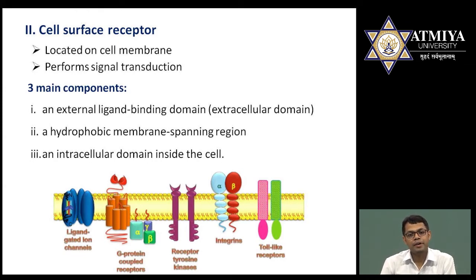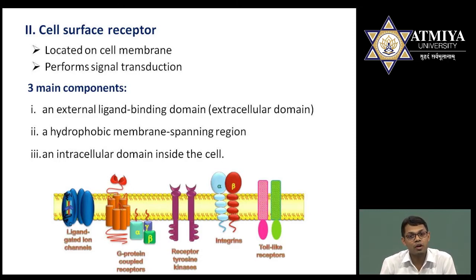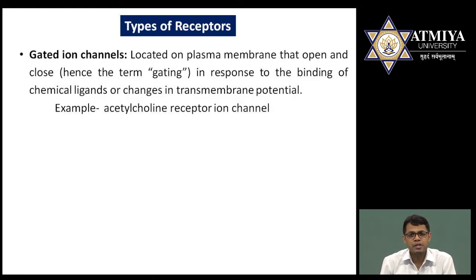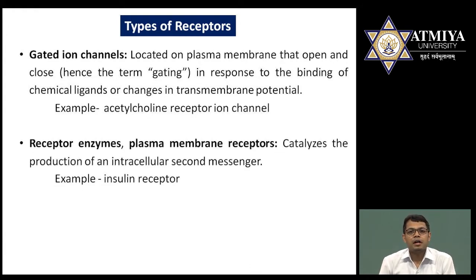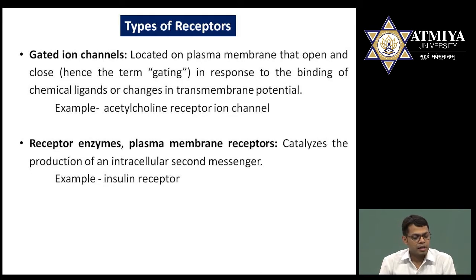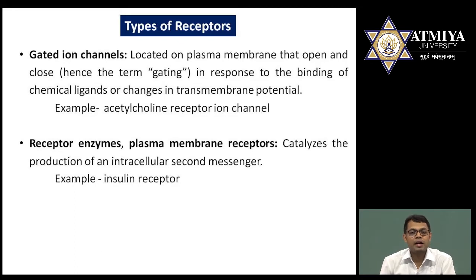The third component is the intracellular domain, located inside the cell, where secondary messengers bind or are activated. Examples of cell surface receptor types include ligand-gated ion channels, G protein-coupled receptors, receptor tyrosine kinases, integrins, and receptor-like receptors. Gated ion channels are located on the plasma membrane and are responsible for the passage of ions; the gate is usually closed but opens when voltage is generated or a neurotransmitter binds.